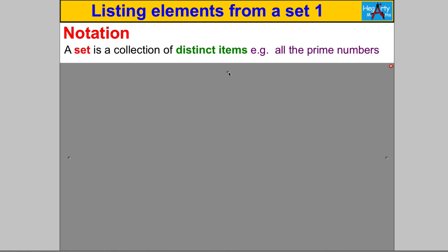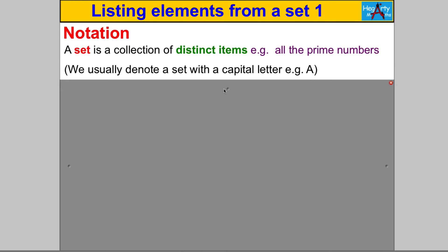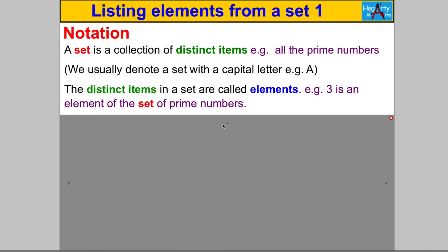It's really important that the items in the set are different. All the prime numbers are different and the set is simply a collection of these different items. We usually denote a set with a capital letter, for example capital A. The distinct items in a set are called its elements.